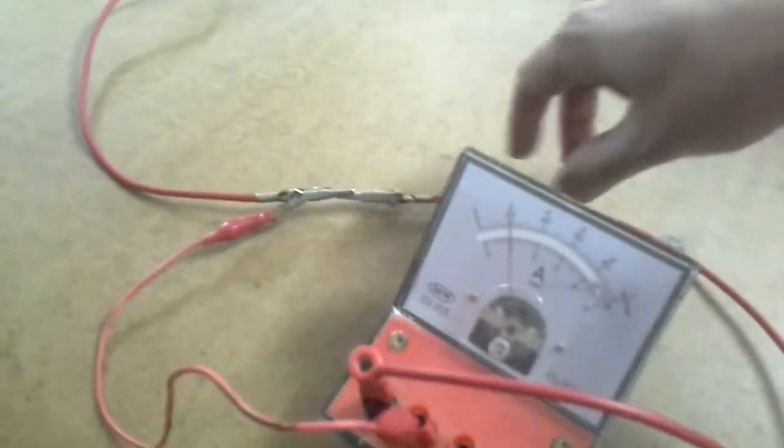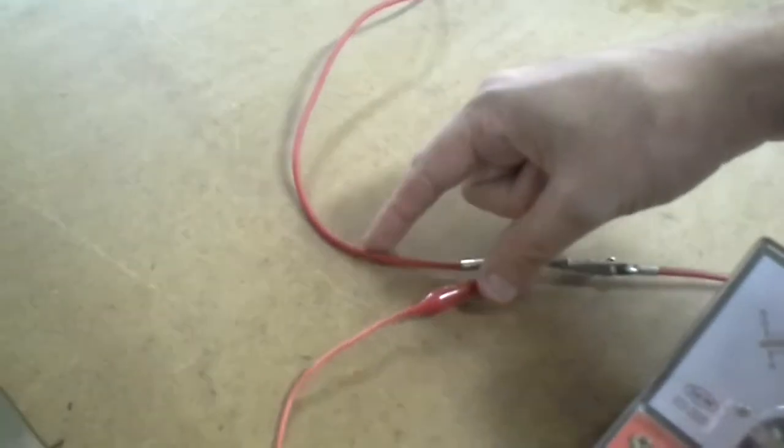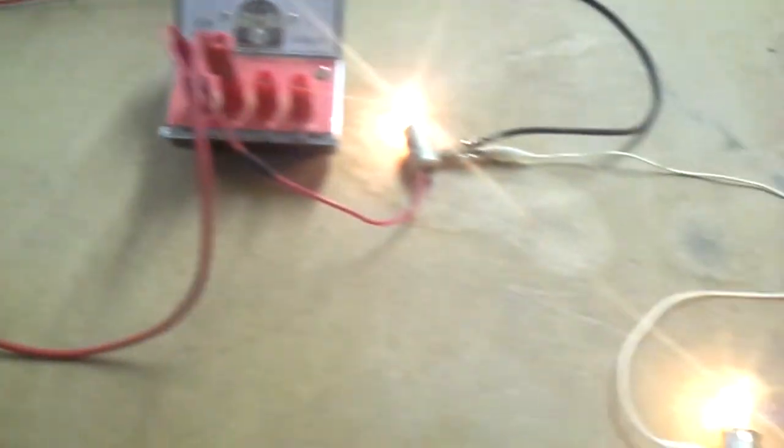So what's happening is the current is coming through here. It's splitting at the junction. We've got Kirchhoff's, by Kirchhoff's first law, two amps coming in, one amp going this way, one amp going this way.